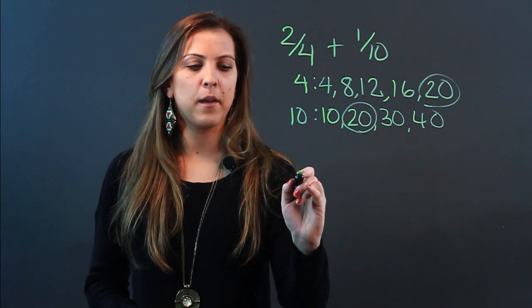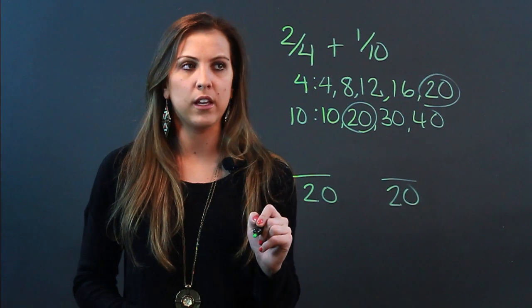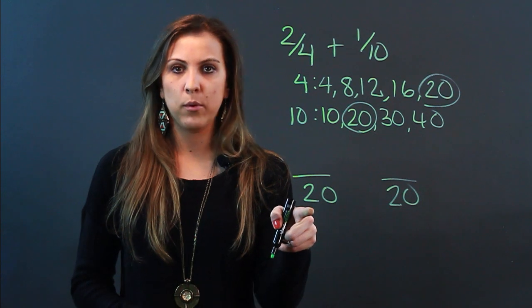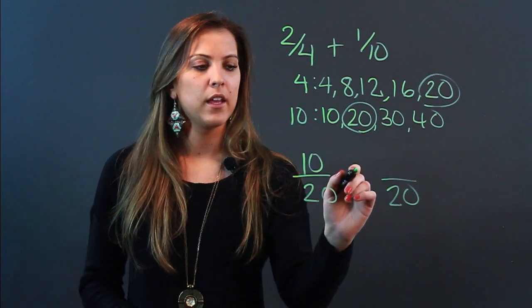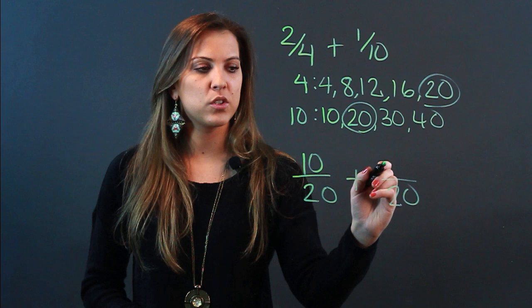Now if you want to finish this and go ahead and add them, that means I want to change both of these fractions to have a denominator of 20. To get from 4 to 20, I multiply by 5, so I do 2 times 5 to get 10. To get from 10 to 20, I multiply by 2, so I do 1 times 2 is 2.